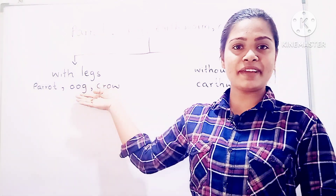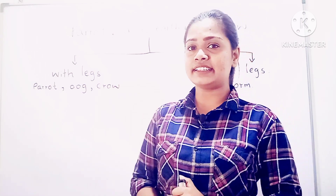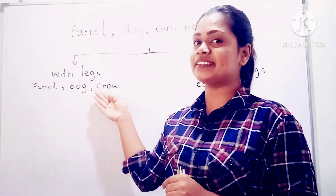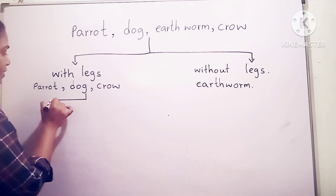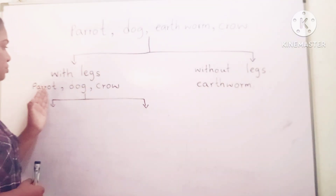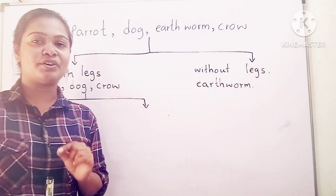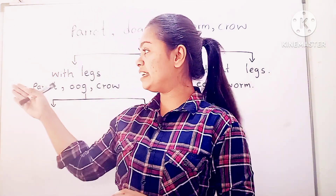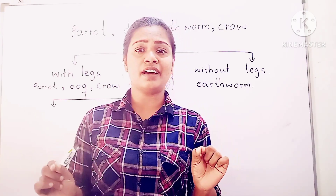Now there are three animals remaining. Let's find a characteristic that we can use to categorize the three animals into two groups. We can classify them as: with wings and without wings.